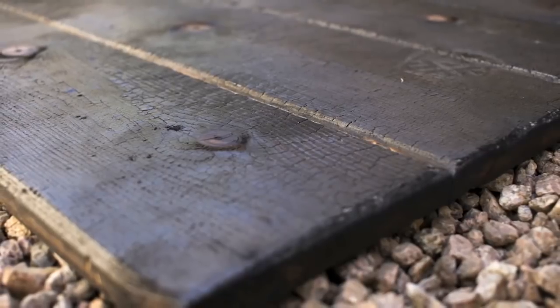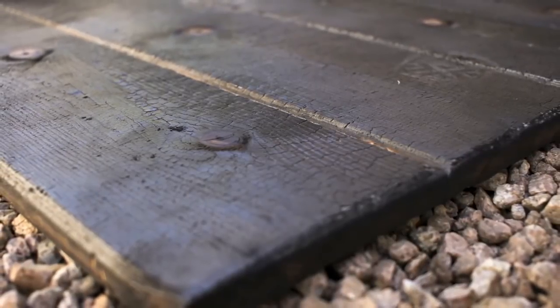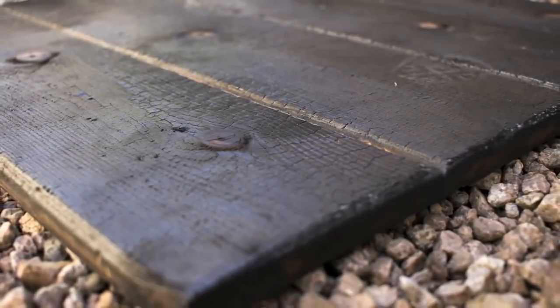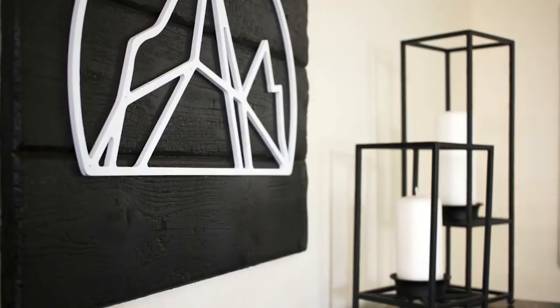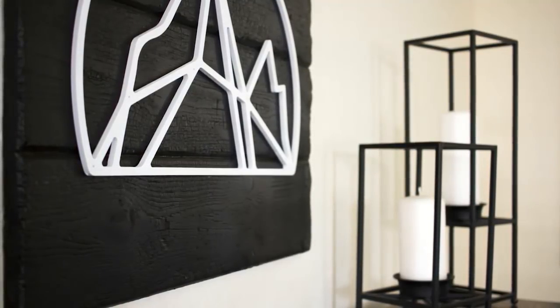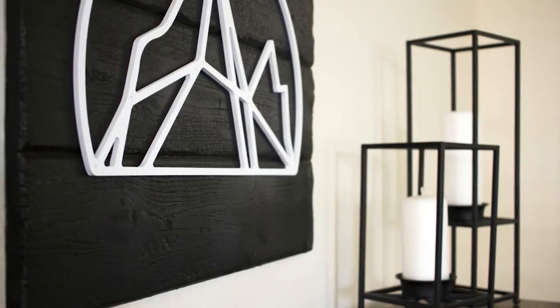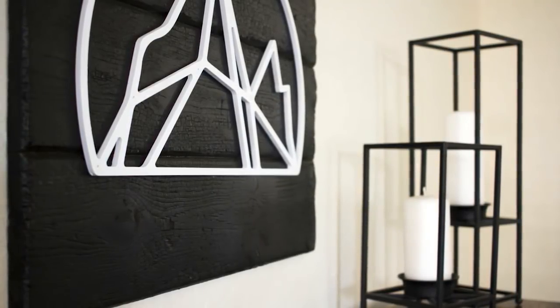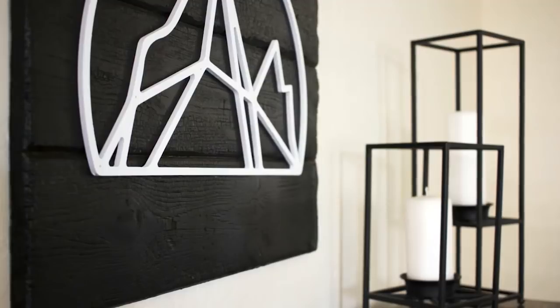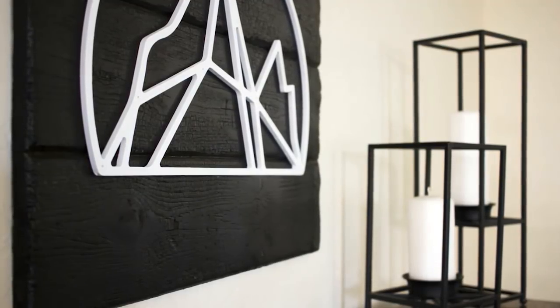I've been wanting to try this technique called Sho Sugi Ban for a long time. It basically consists of burning the outside of wood to make it resistant to water and to weathering. Charring siding has been a technique used in Japan for hundreds of years, but recently I've started seeing it being used on furniture as well.